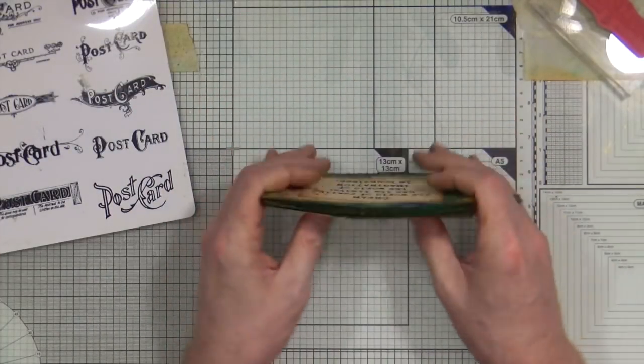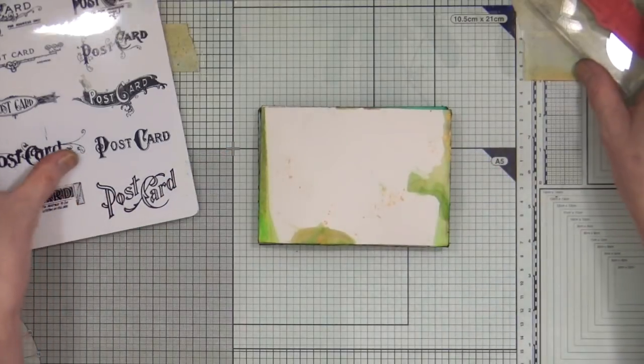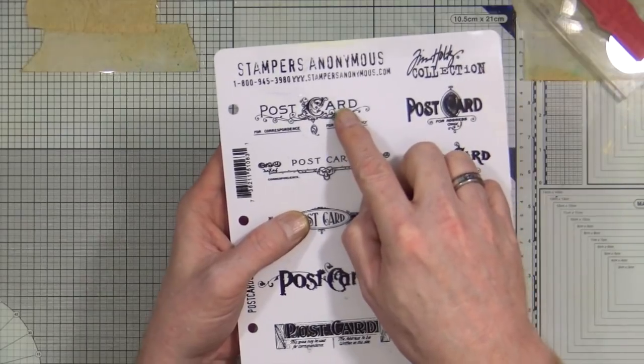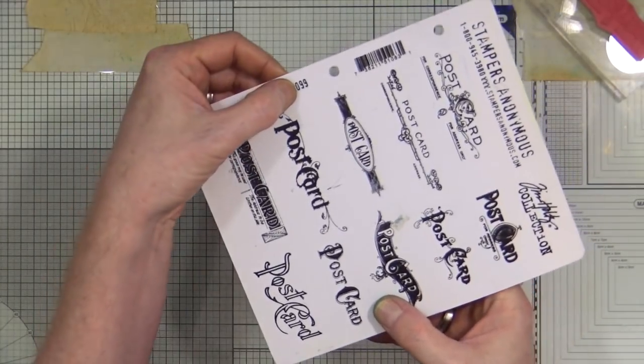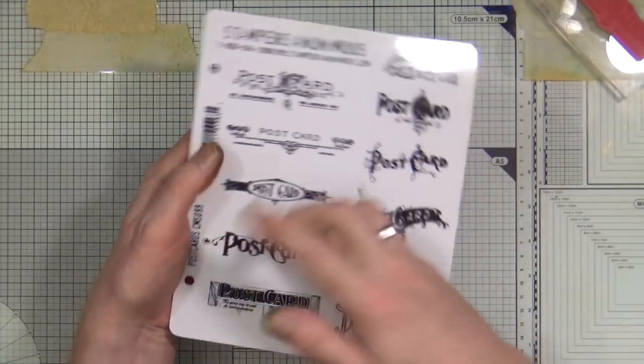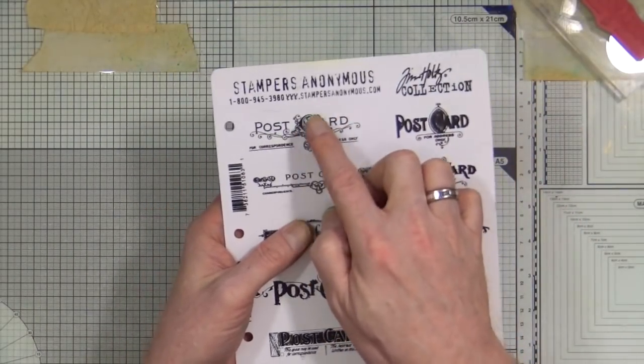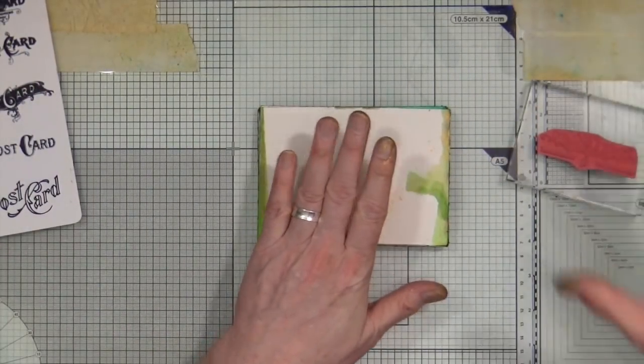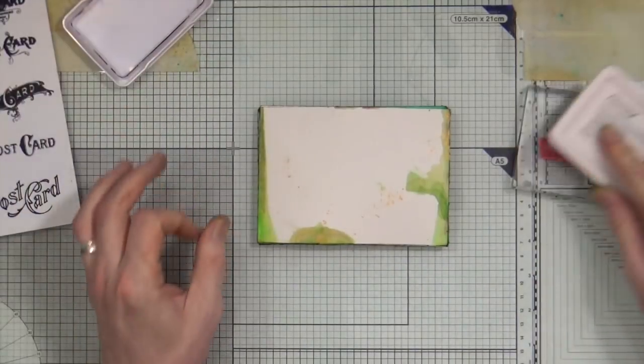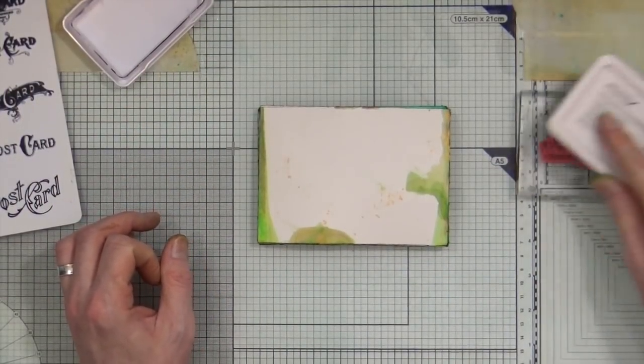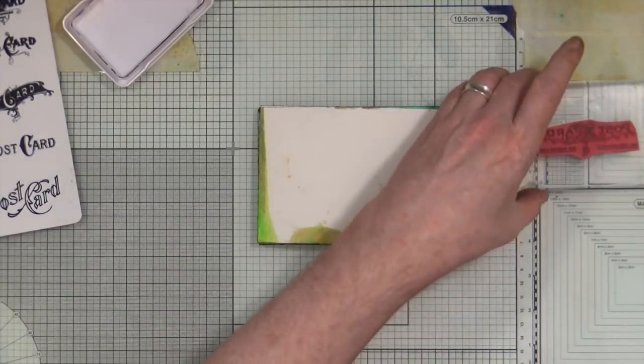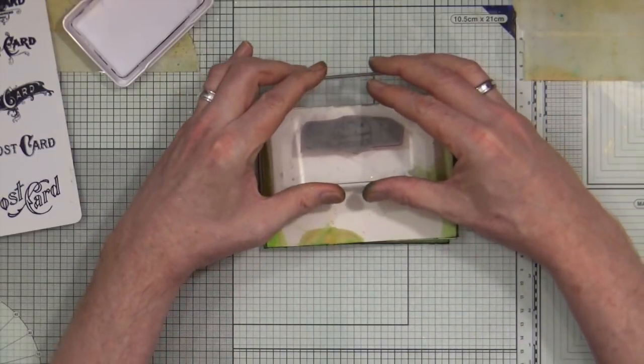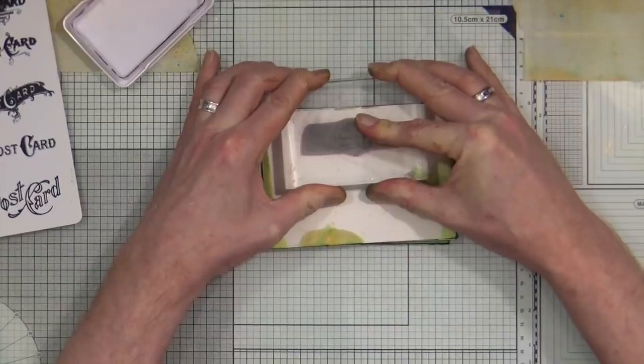So to finish off, what I'm going to do is I'm going to stamp onto the back. I'm going to use this postcard stamp from Tim Holtz, it's a very early one as you can see, number 99. So back in the day, I think he's on like 300 or something now. So this is a very early stamp. I'm going to use this postcard stamp here and I'm just going to stamp it onto the back. Just make sure I get it the right way up. Just stamp that onto the back, like so.